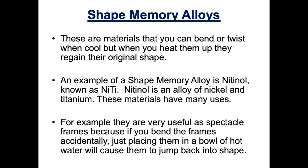Our next smart material is called shape memory alloys. An alloy is a mixture of metals, and a shape memory alloy is a material that regains its original shape when you heat it. So you could bend or twist this alloy when it's cool, but when you heat it up, it would regain its original shape. Nitinol is an example of a shape memory alloy — it is an alloy consisting of nickel and titanium. You will find nitinol in spectacle frames; if you bend the frames accidentally, all you have to do is place them in a bowl of hot water and they will regain their original shape.